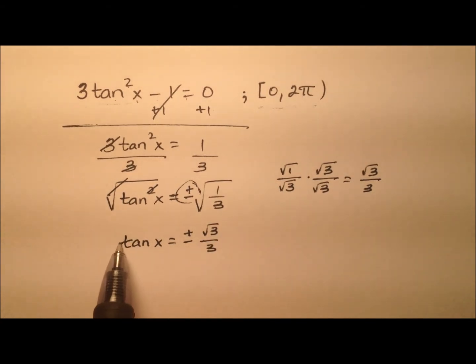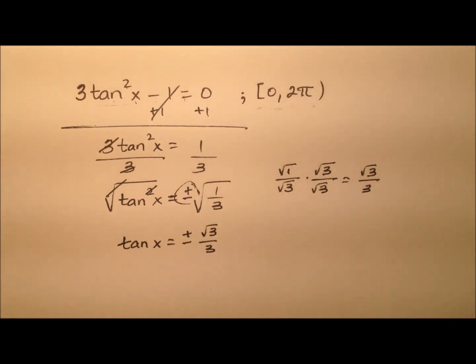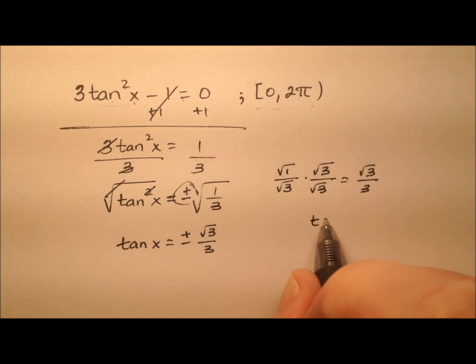All right. So we need to know at what angle, when we take the tangent of it, will we get the square root of 3 over 3, and without regards to sign, because we're going to include positive and negative both. Well, the reference angle for tangent for the square root of 3 over 3 is going to be 30 degrees.